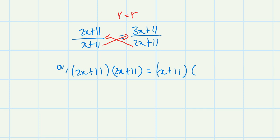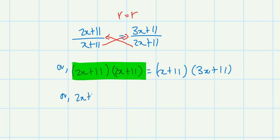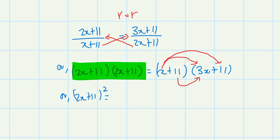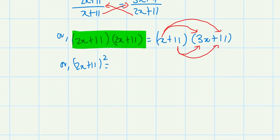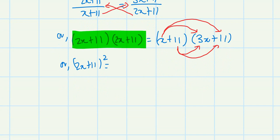So (2x+11)² is equals to (x+11)(3x+11). Expanding the right side: x times 3x = 3x², plus 11x, plus 33x, plus 121.